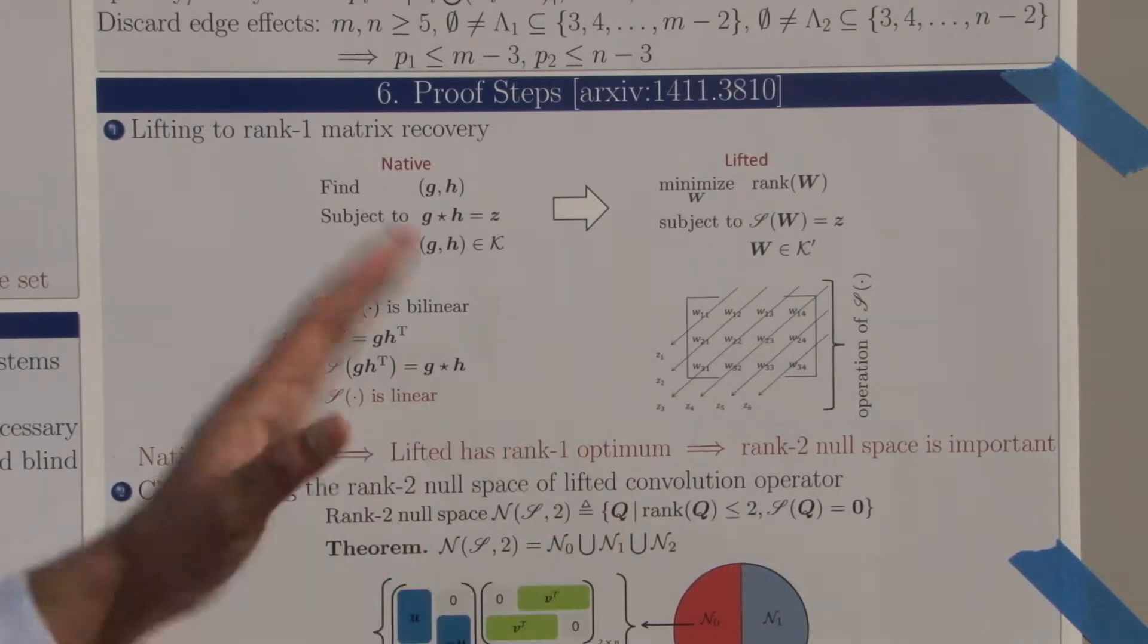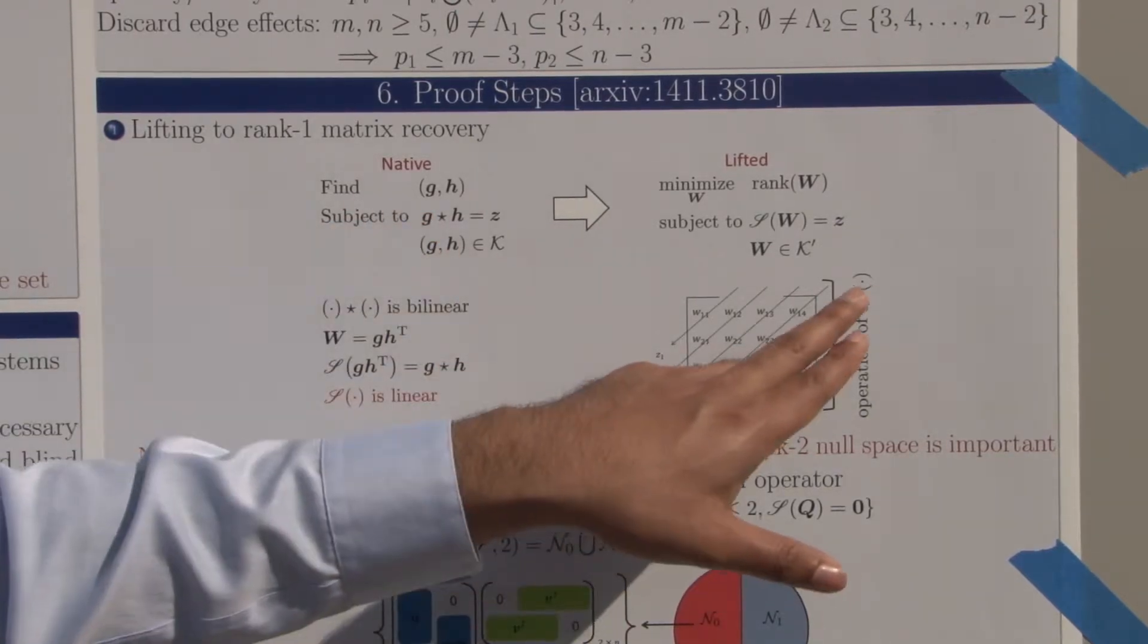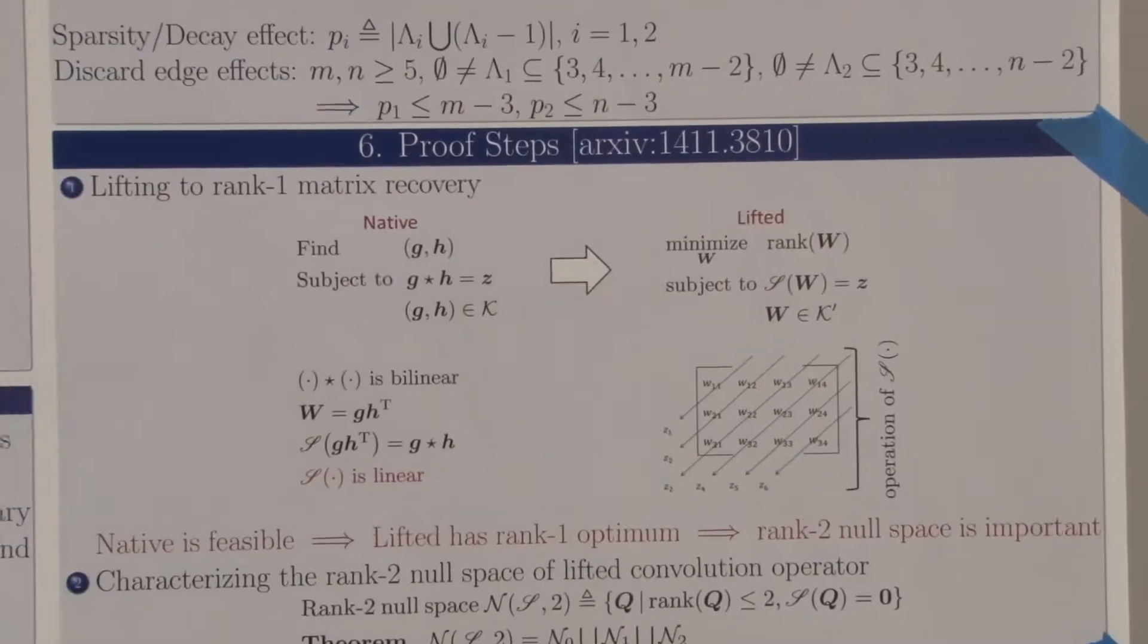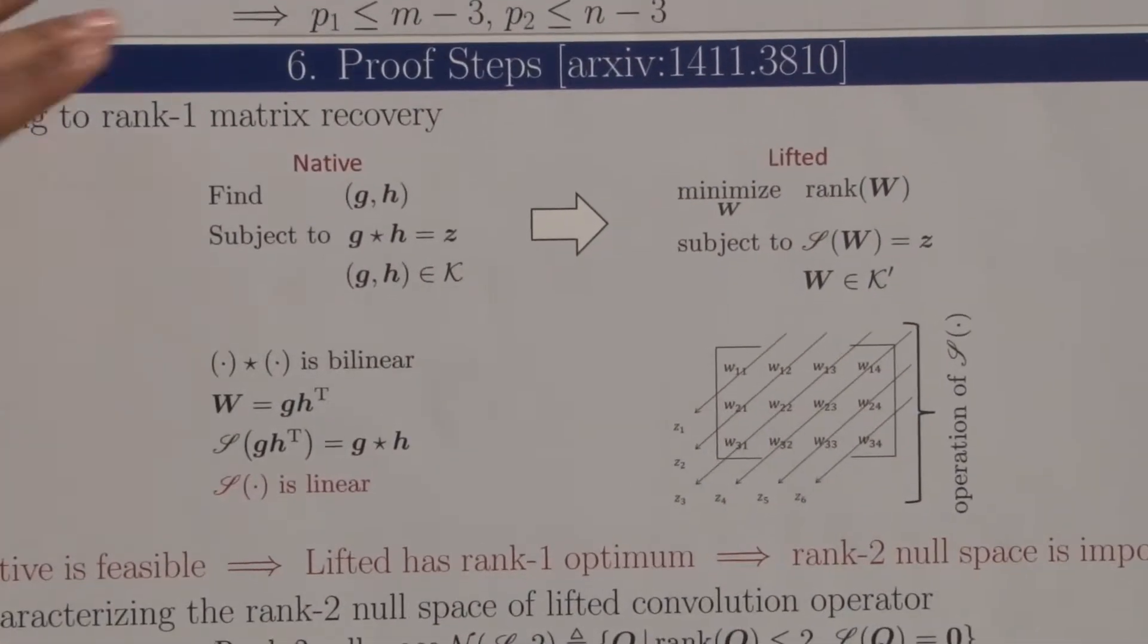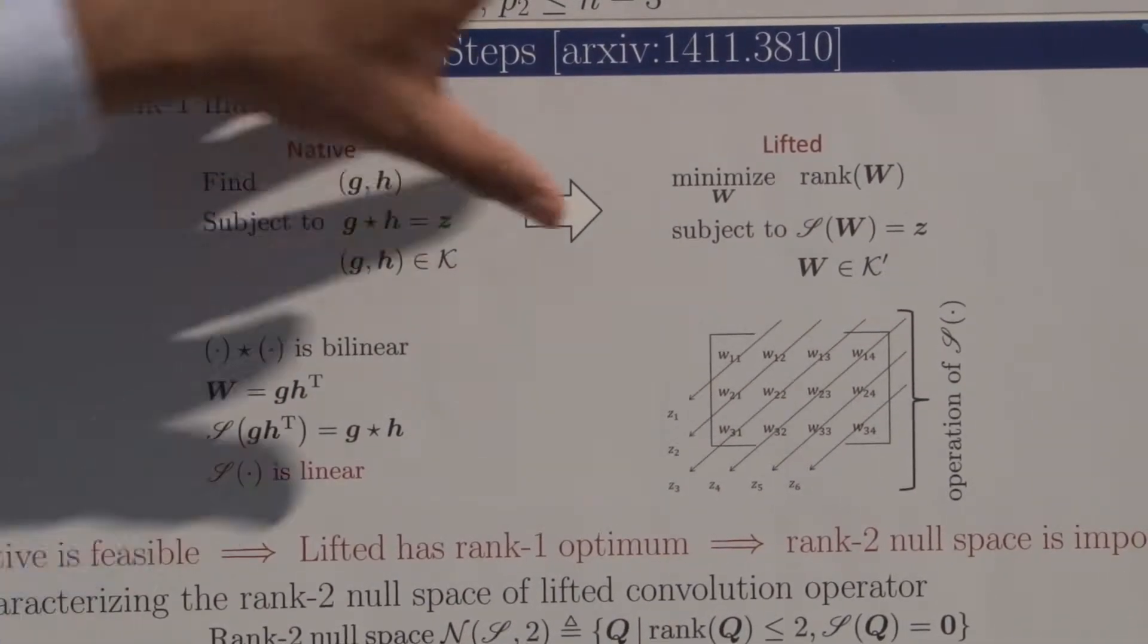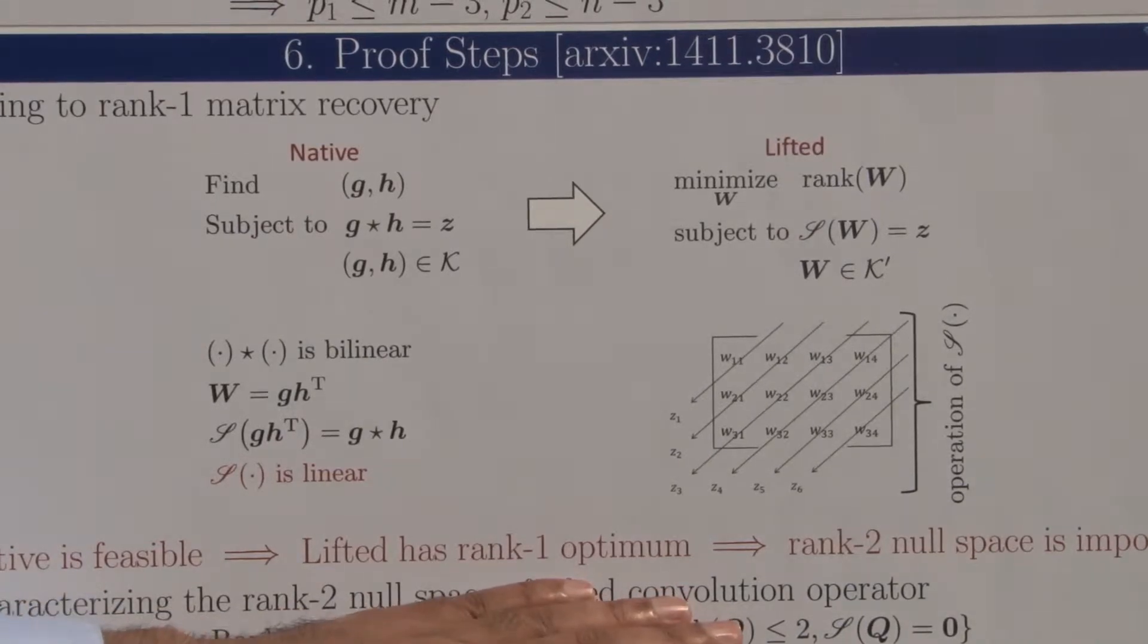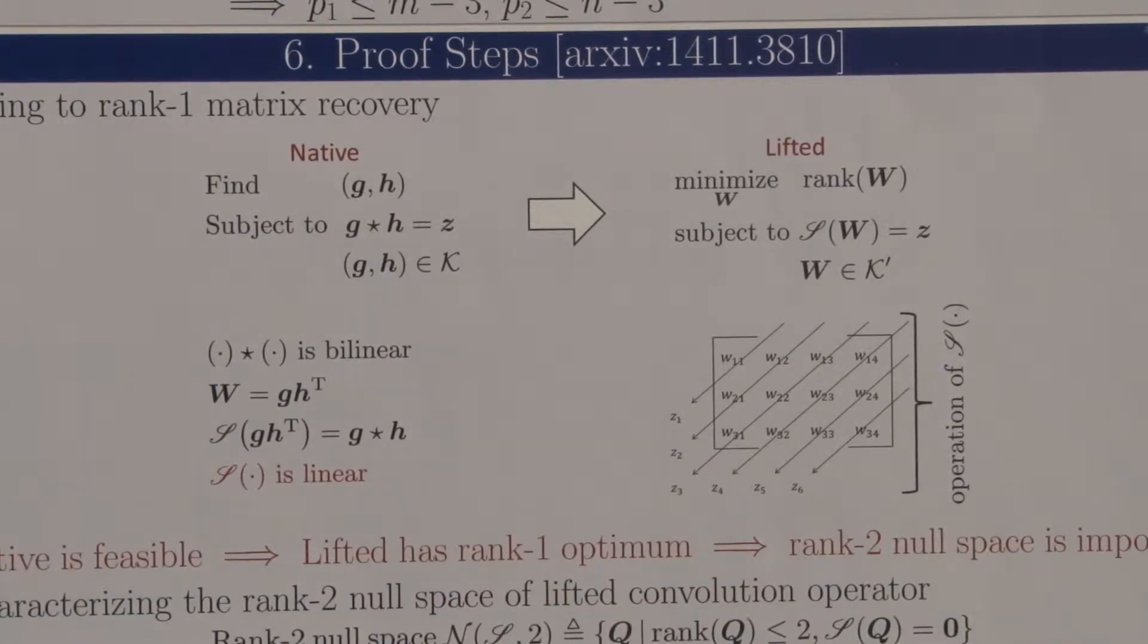Just for visual perception, in case of a convolution, this script S operator sums the elements along anti-diagonals. If the native problem is feasible, then this problem has a rank one optimum, and so the rank two null space is important to characterize identifiability.